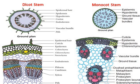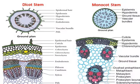The number of vascular bundles is lower in dicot stem compared to monocot stem. A lysigenous cavity is present in the xylem of monocot stem but is generally absent in dicot stem. That is all about the differences between monocot and dicot stem.